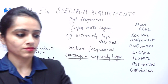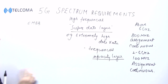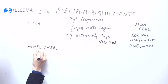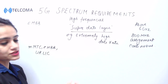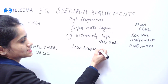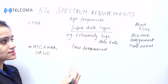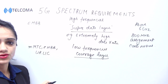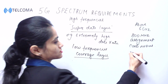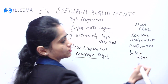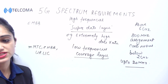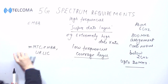For Massive Machine Type Communication specifically, we can choose low frequencies. This is the coverage layer — we are not focusing on capacity here, only coverage. Wide area and deep indoor coverage are required here. We can use frequencies below 2 gigahertz with up to 20 megahertz continuous assignment.